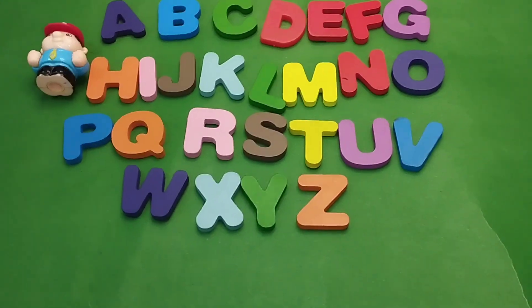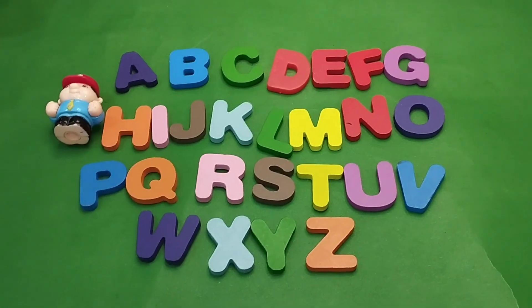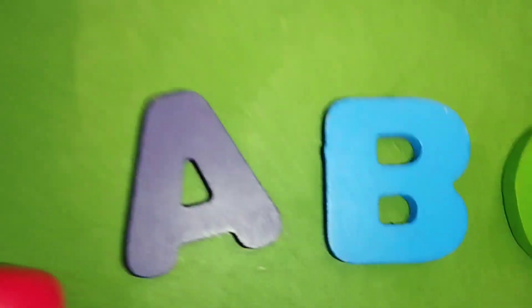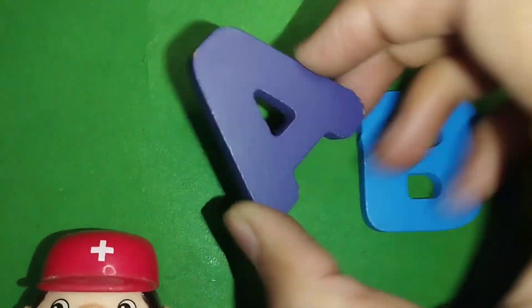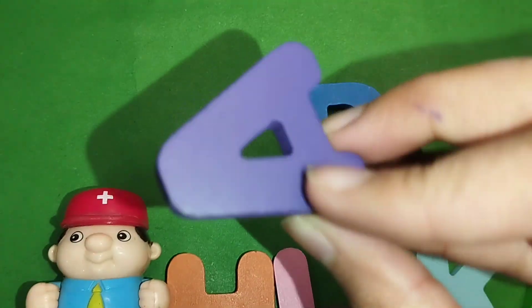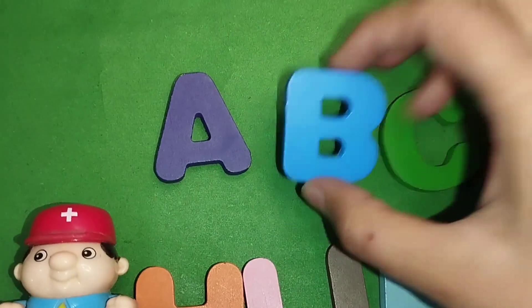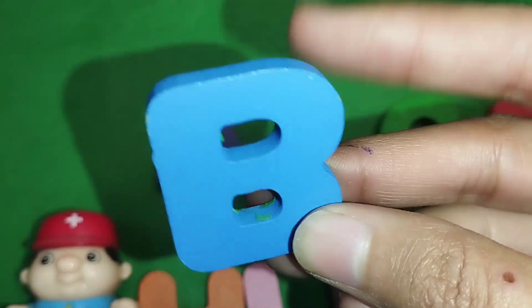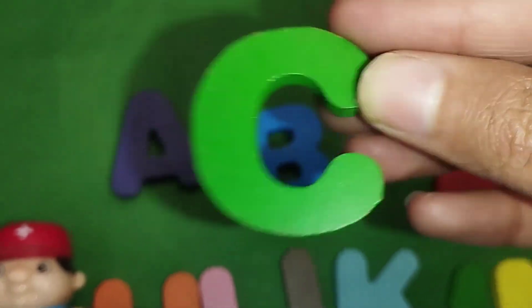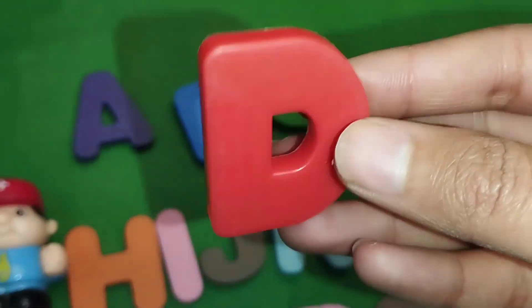Beautiful colors, beautiful capital letters. Let's learn the first letter, letter A. This is letter A, capital letter A. This is B, letter B. This is C, letter C. Letter D.